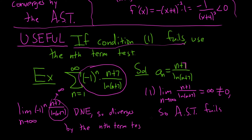So when the alternating series test fails, when the first condition fails, always go back and then use the nth term test. I hope this video has been helpful. Good luck.